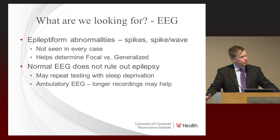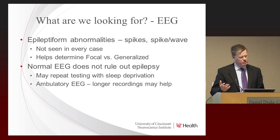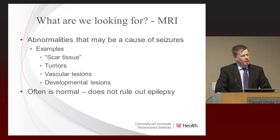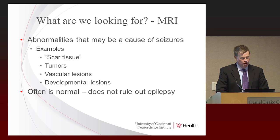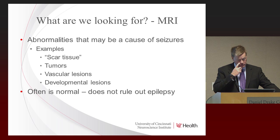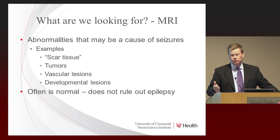We are looking for two big things: are we seeing focal spikes arising over one region of the brain, for example the right temporal lobe, or are we seeing generalized spike wave? That helps us make the distinction between focal and generalized seizures and ultimately determine treatment. We also do MRI to look for an underlying structural lesion — tumors, vascular lesions, developmental abnormalities, or scar tissue. But most of the time the MRI is normal. A normal EEG and a normal MRI do not rule out epilepsy. Someone may have epilepsy with both normal.